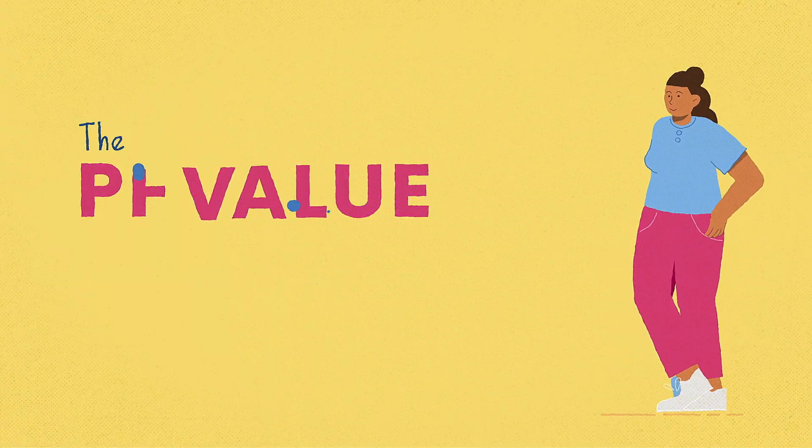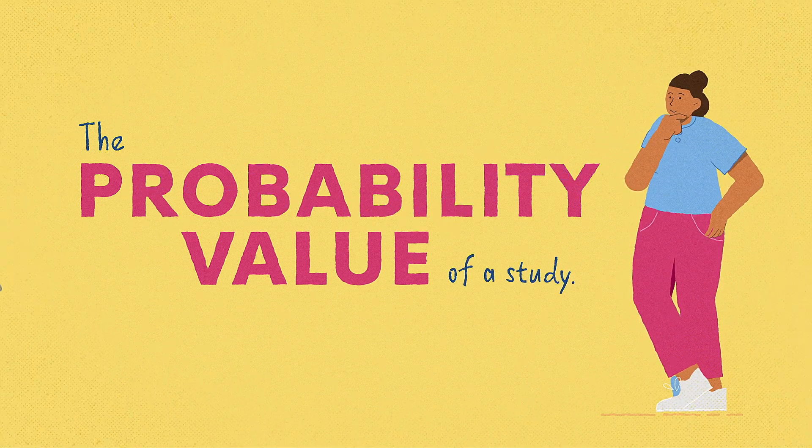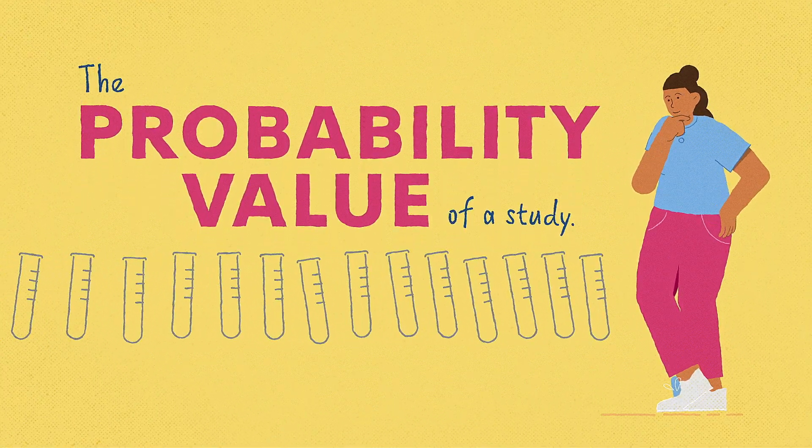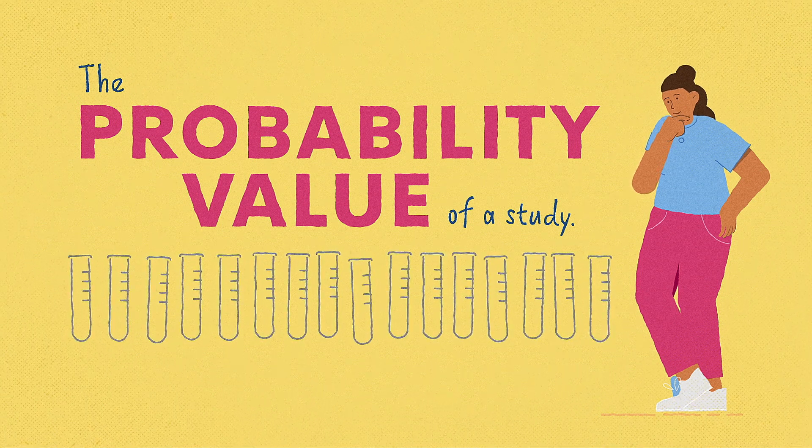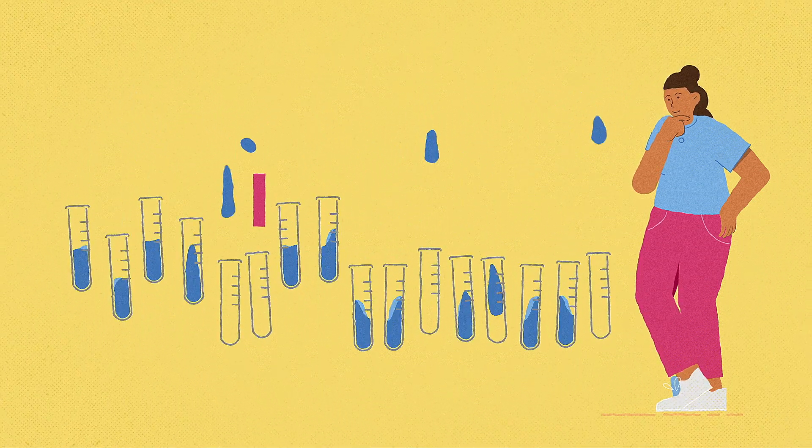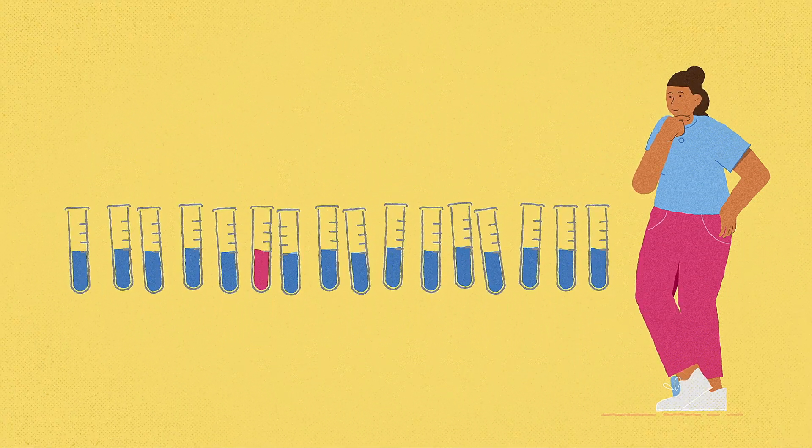Lastly, a term that sounds complicated but really isn't is the p-value or the probability value of a study. This term refers to the statistical significance of study results. The more statistically significant the study results, the more reliable they are.